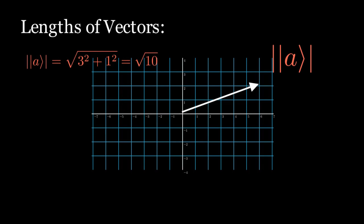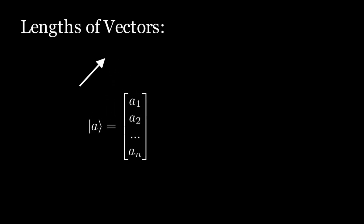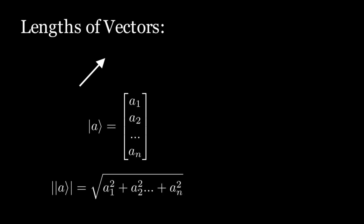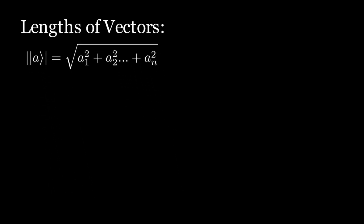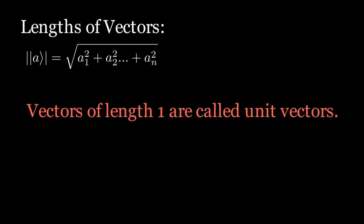More generally, if ket a equals the column vector with entries a₁, a₂, up to aₙ, then the length of ket a equals the square root of a₁² + a₂² + … + aₙ². An important note: vectors of length 1 are called unit vectors. We will see later that qubits are represented by unit vectors.